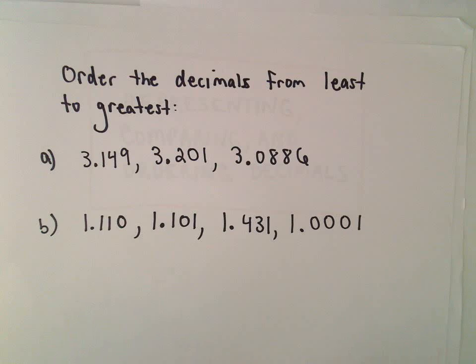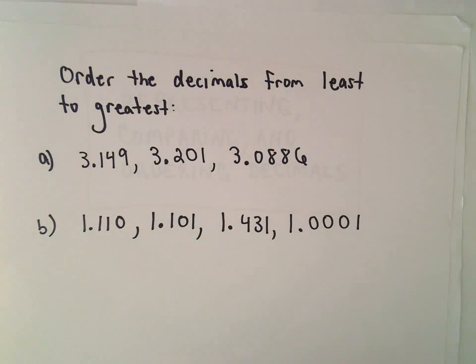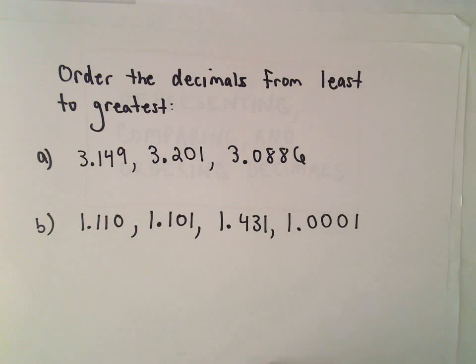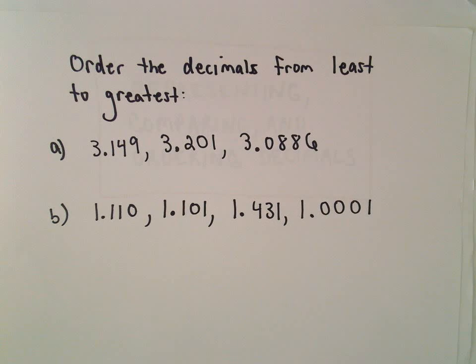And I think you'll often find that's how people actually say decimals. People don't typically say we've got 3 and 149 thousandths. People will typically just say 3.149 because it's much easier to say. But anyways, from least to greatest.